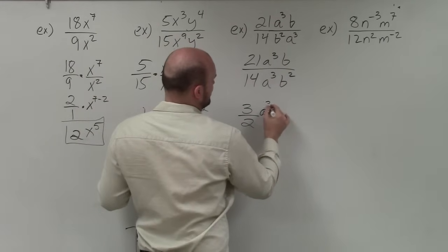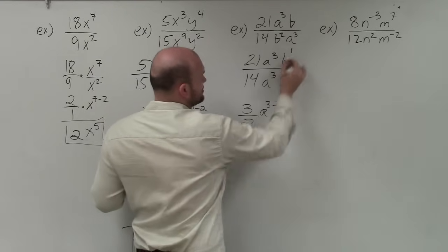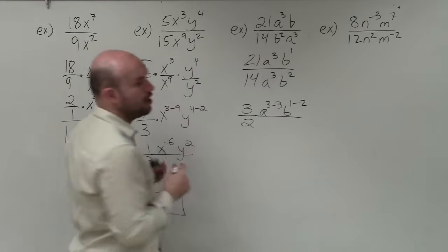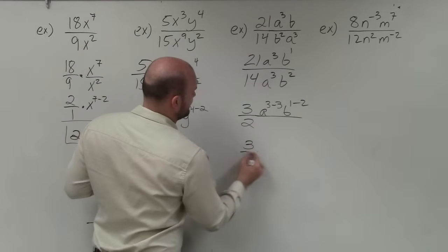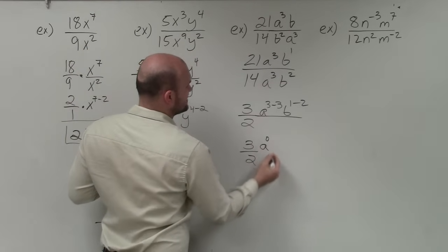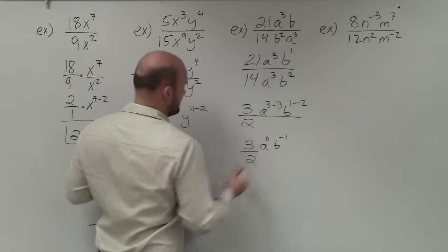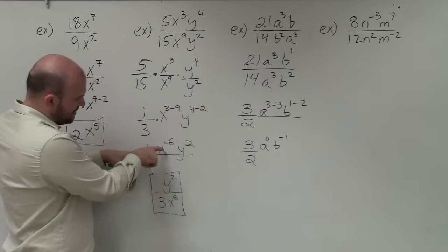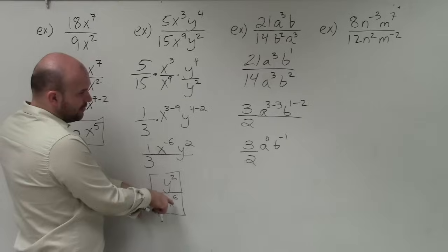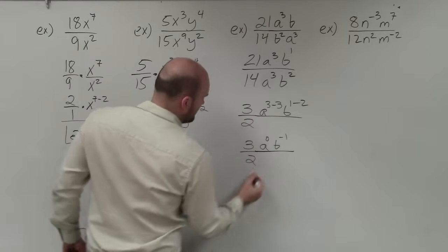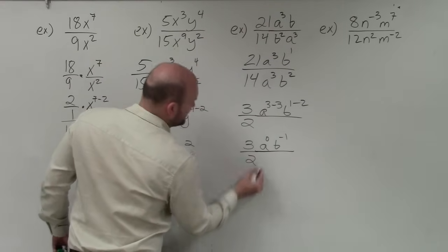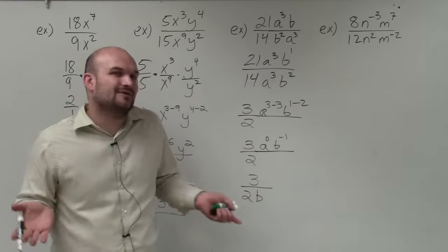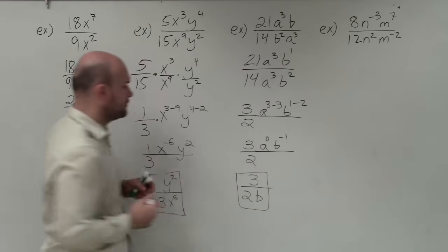Now, over here, I have a to the 3 minus 3, and b to the 1, because there's a 1 up there if we don't have anything listed, minus 2. Again, those are all written in as in your numerator. So then I have 3 halves. Well, a to the 3 minus 3 is going to be a to the 0 power, and then b to the negative first. Now, remember, anything raised to the 0 power is just going to be 1. And b to the negative first, just like we had over here, if it's negative in the numerator, to rewrite it as positive, we're going to need to put it in the denominator. So therefore, my final answer is going to be 3 times 1, which is a to 0. So that's just going to be 3 over 2b to the first power. But we're not going to write the 1 up there, so we'll just leave it as 3 over 2b.